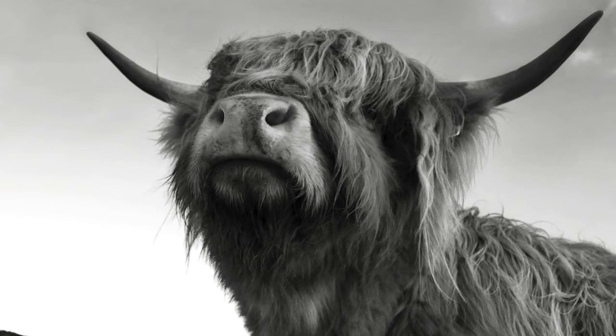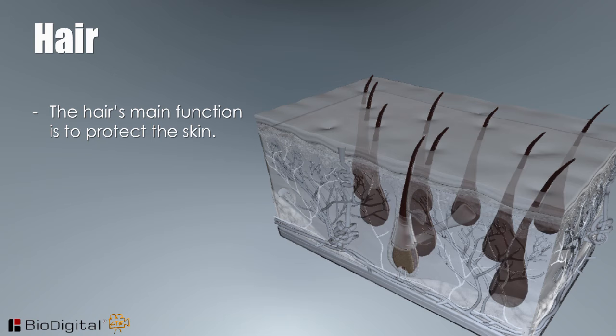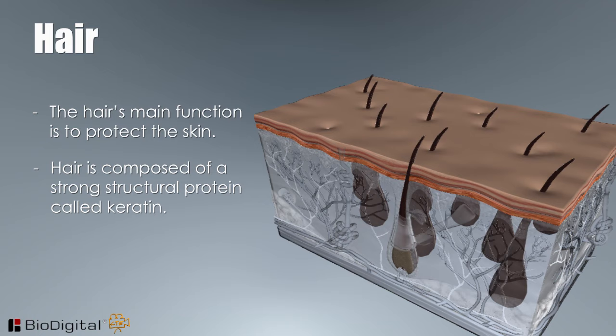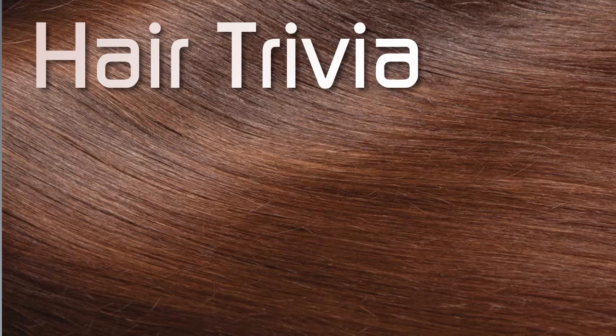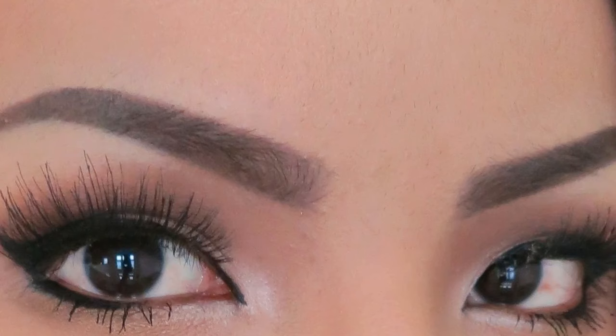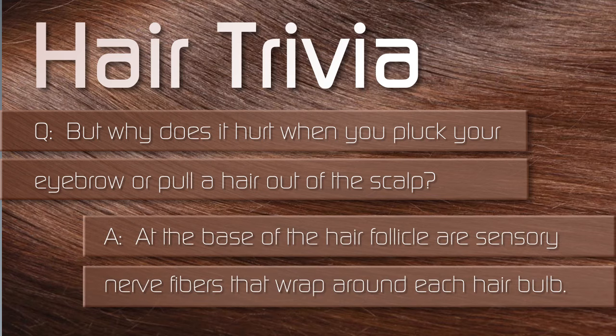The hair is the second major part of the integumentary system. The hair's main function is to protect the skin. Hair is composed of a strong structural protein called keratin and grows within a hollow tube called the follicle. Hair can be shaved, cut, styled, and groomed — but why doesn't it hurt when you cut your hair? It doesn't hurt because there are no nerves. But it does hurt when you pluck your eyebrow or pull a hair from the scalp, because at the base of the hair follicle are sensory nerve fibers that wrap around each hair bulb.